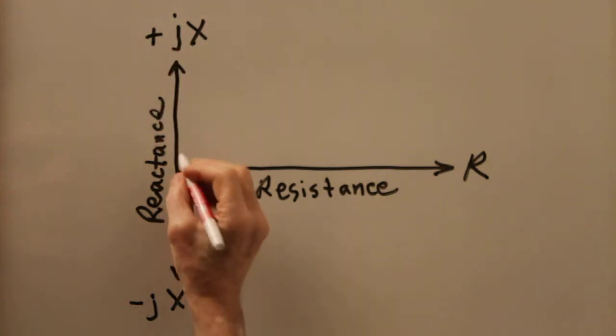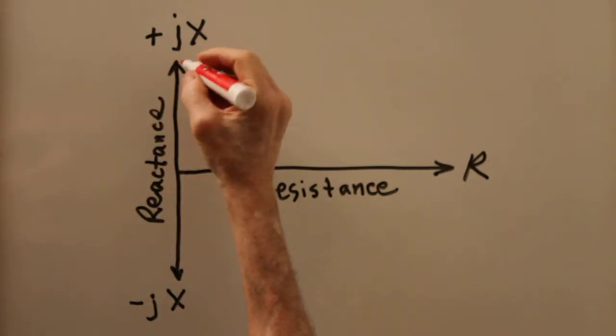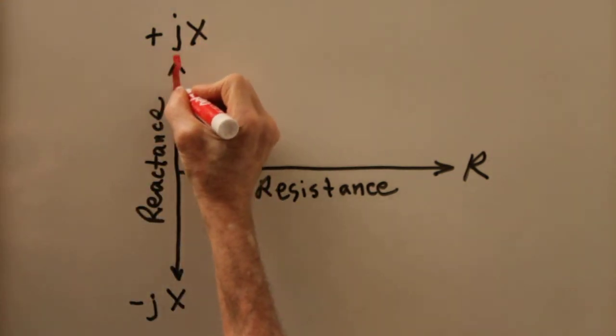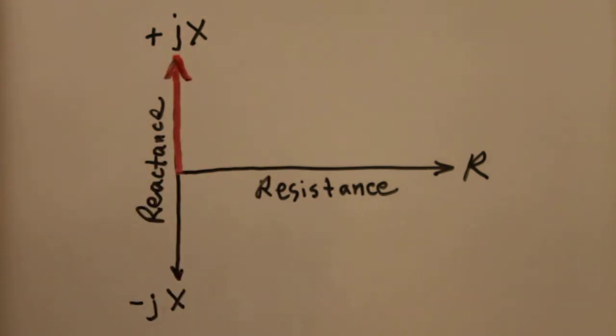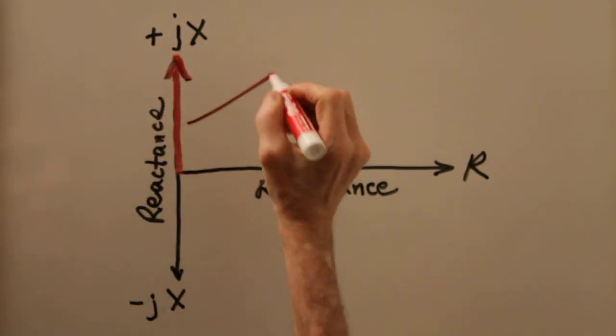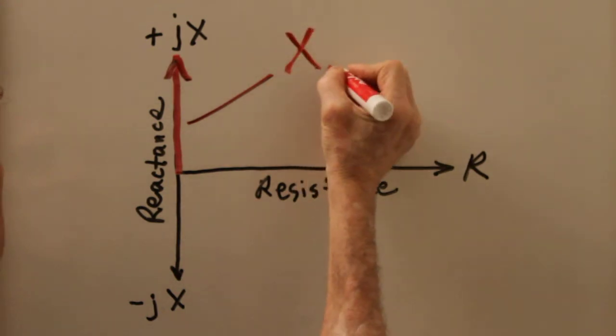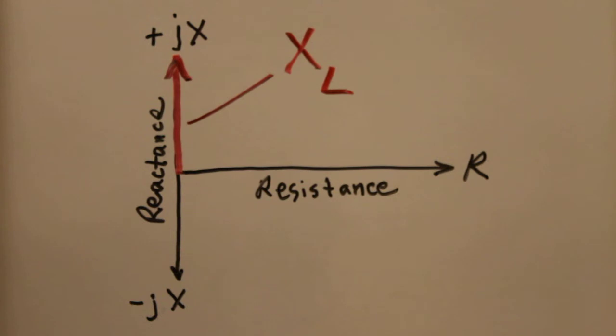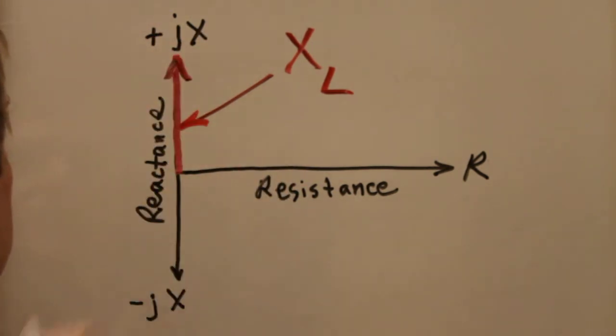symbolized X sub L. Pure inductive reactance goes up that way. If we have a combination of resistance and inductive reactance, we'll end up with a point somewhere in this upper right hand part of the half plane.